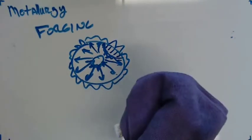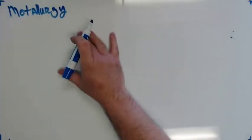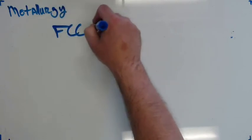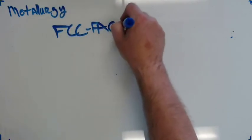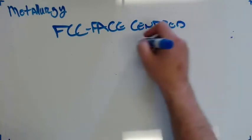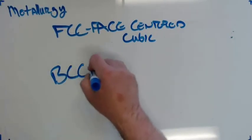So let's talk about crystalline structures of metal. There are two basic crystalline structures of metal. There is FCC, which is face-centered cubic. And there is BCC. Body-centered cubic.